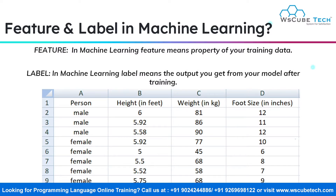We'll understand this with the help of an example. Say I have this dataset by the name person.csv. Now each column that you can see here inside this dataset, these are the features. So what are the features here? This person, then height, then weight, then foot size — these are all the features. So each column represents a distinct feature, or you can call it a property. In machine learning, features are the properties of your training data, or simply the column names in your training dataset.